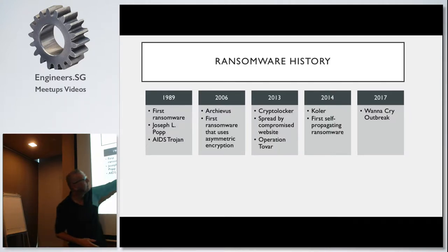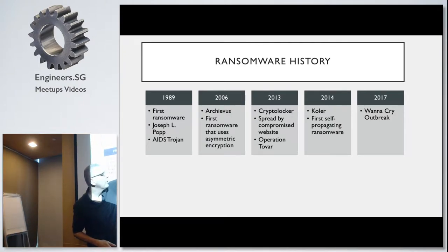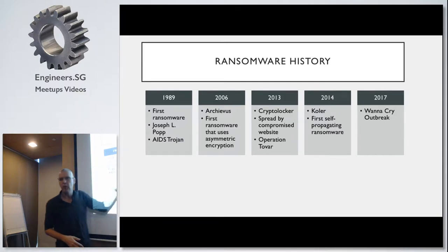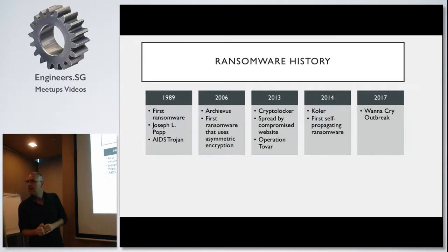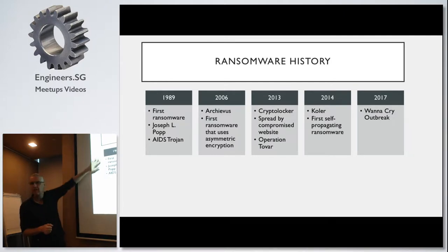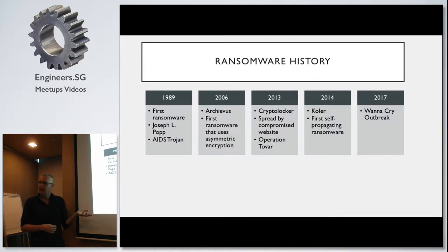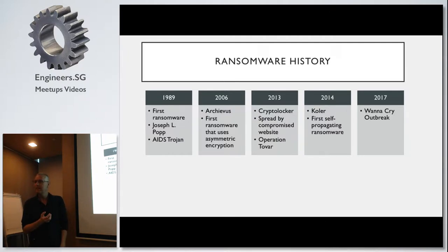I first heard about ransomware around 2013 when Cryptolocker came out — that was the first more widespread one that people got seriously affected by. Even if ransomware encrypted things in earlier versions, they often didn't actually collect ransom. The problem with ransom is that before Bitcoin, how would you actually get the money? You couldn't have them send to a bank account or drop cash somewhere. Now with Bitcoin, it makes it actually possible on a wide scale to collect money.